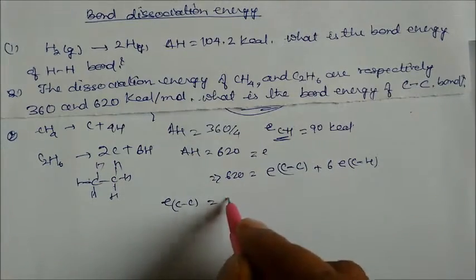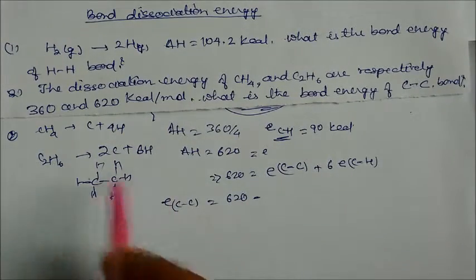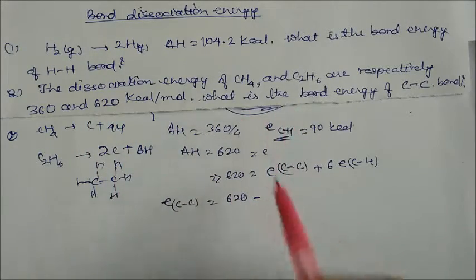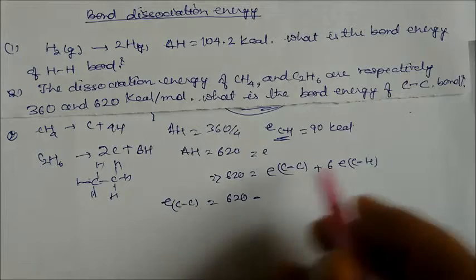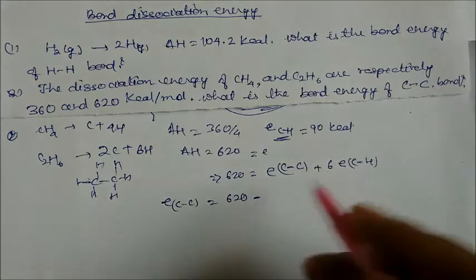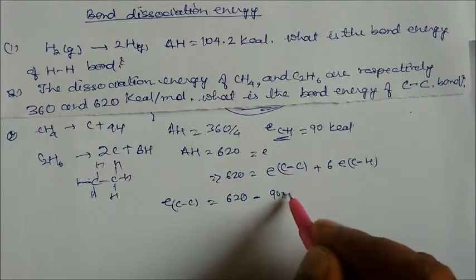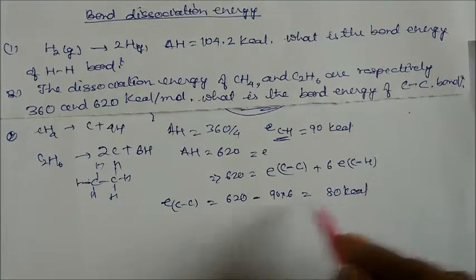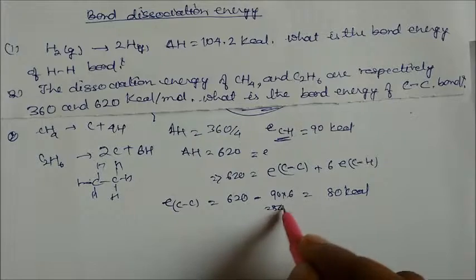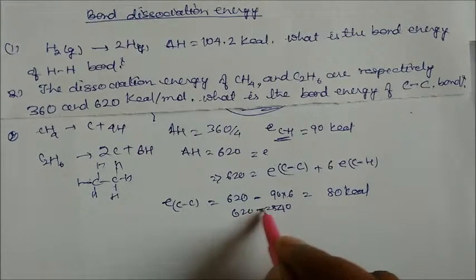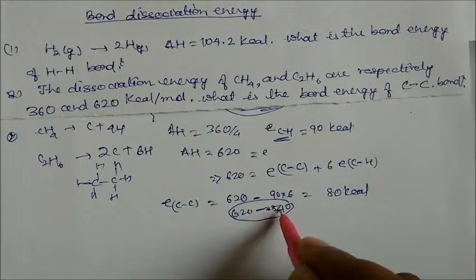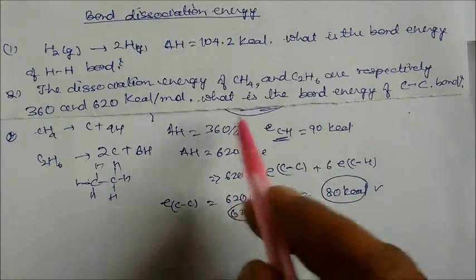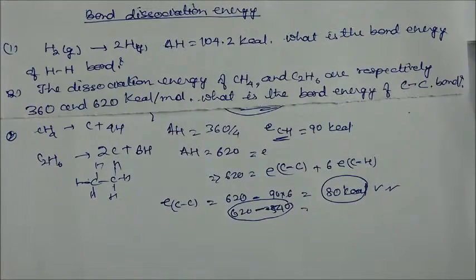E(C-C bond) = 620 minus 6 × E(C-H). Since E(C-H) = 90, we get 6 × 90 = 540. So E(C-C bond) = 620 minus 540 = 80 kilocalorie. This is the bond energy of the C-C bond.